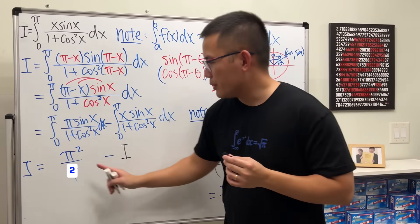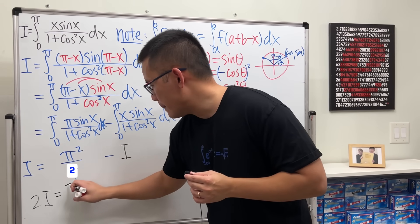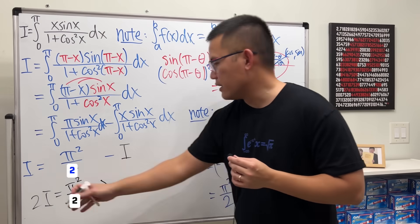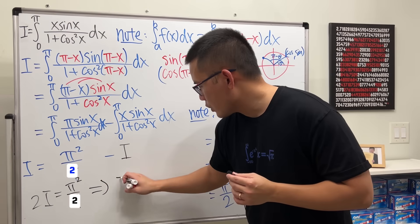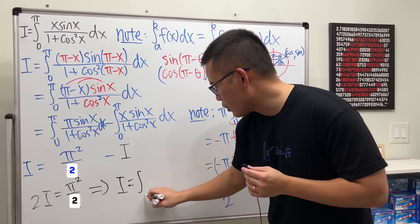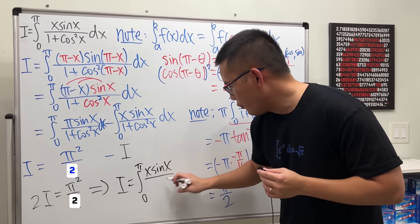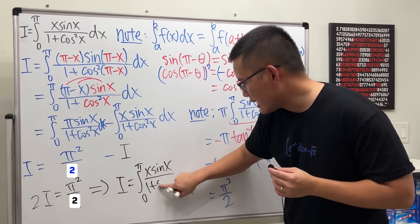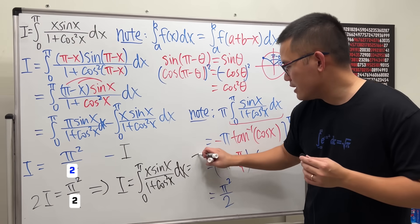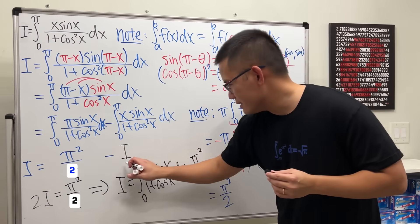Now we have I = π²/2 − I, so 2I = π²/2. Dividing both sides by 2 gives I = π²/4. Therefore the original integral — the integral from 0 to π of x·sin(x)/(1 + cos²x) dx — equals π²/4. Done!